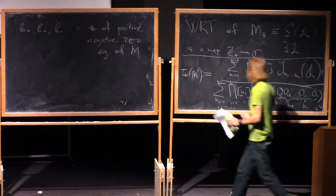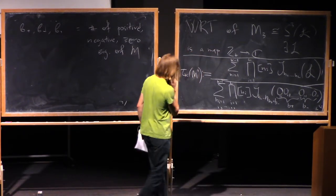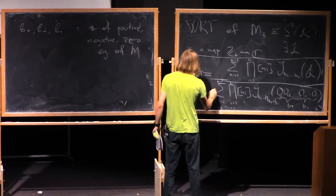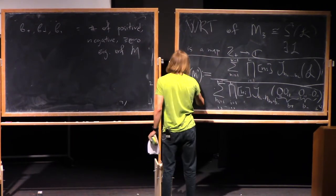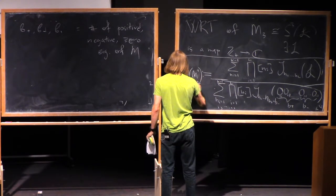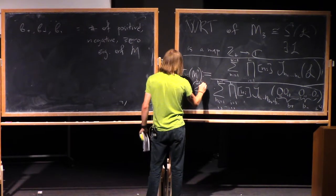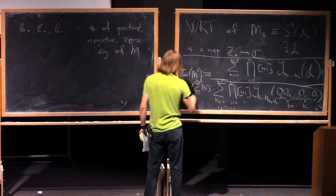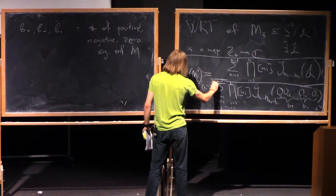So first, I do the same thing where I take, instead of my link L, I take a link which consists of B plus number of unknots with framings plus one. And B minus number of unknots with framing minus one.